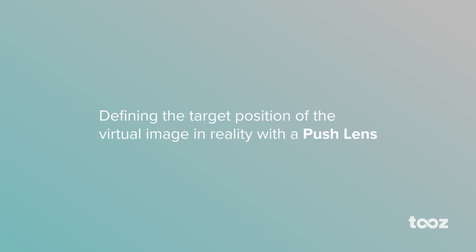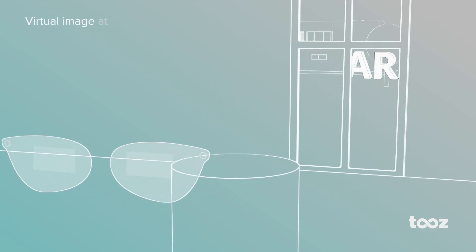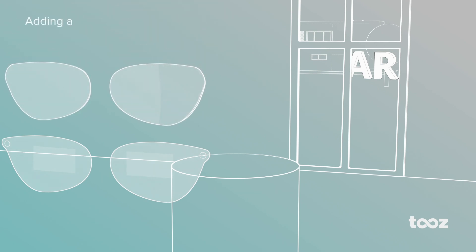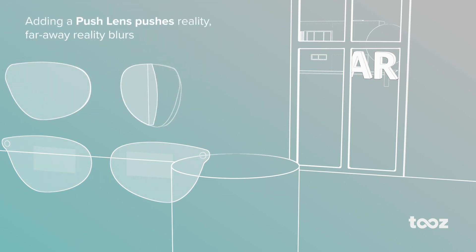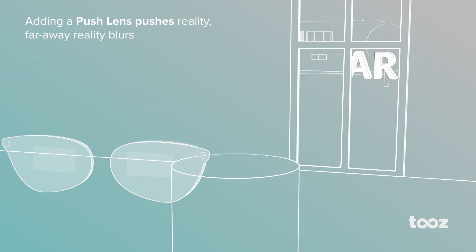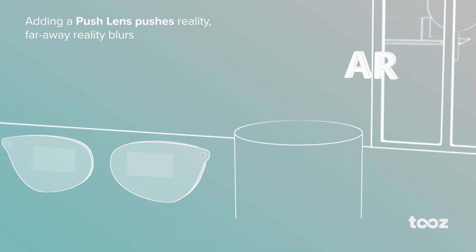Let's take a look at what effect the use of push lenses has on AR content. Without push lenses, the AR content is projected to the viewer at an infinite distance. By the optical power of the push lens, the target position of the virtual image relative to the real environment is defined.